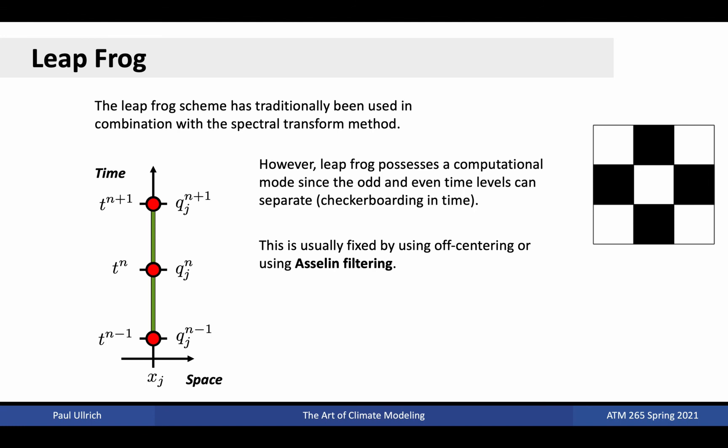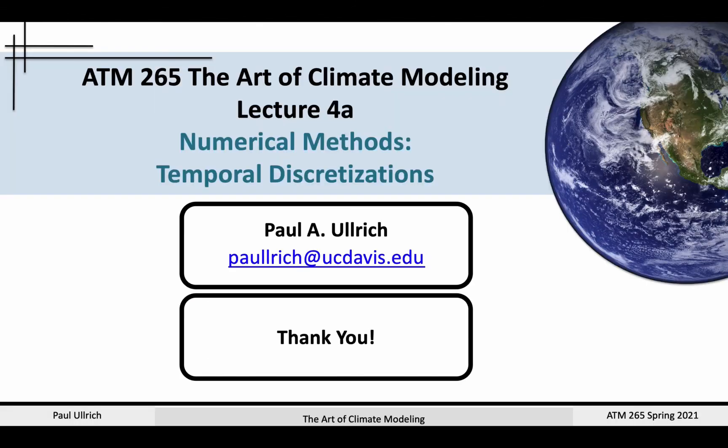Another commonly employed method for introducing diffusion is via Aslan filtering, leading to the modified leapfrog Aslan scheme. Although the leapfrog scheme does provide second-order accuracy, it is generally no longer employed in modern dynamical cores. Newer methods from the study of numerical methods have superseded this approach, and we'll touch on these next time.